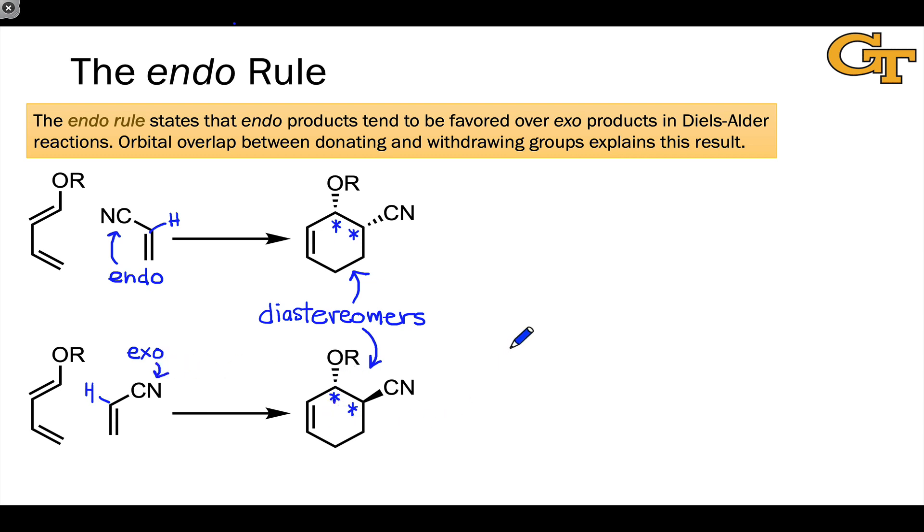An empirical rule developed over the years as the Diels-Alder reaction was studied and applied in a huge number of cases, called the endo rule, tells us the favored product. The endo rule states that products derived from the endo approach of substituents on the dienophile tend to be favored over those in which the substituent is oriented in an exo position, which would give rise to exo products. So endo products tend to be favored in Diels-Alder reactions over exo products. In this particular case, this means that the top product would be the major product, and the bottom product derived from exo orientation of the cyano group would be the minor product.